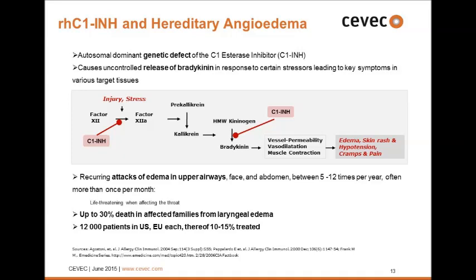For the recombinant human C1 inhibitor, the key point is: if this molecule is defective, you have an uncontrolled release of bradykinin, which leads to damage in blood vessels and upper airways. These patients have recurring attacks of edema in the face and abdomen, occurring 5 to 12 times a year. If it appears in the throat, these patients can actually suffocate — so it is a serious indication.